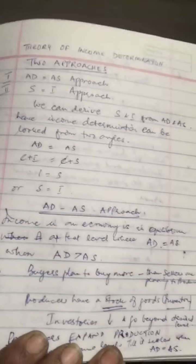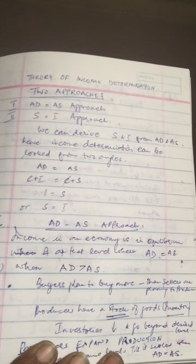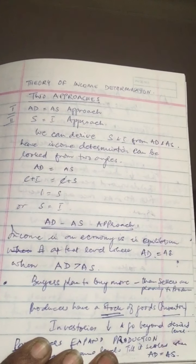Keynesian economics has two approaches: one is the AD-AS approach and the second one is the saving and investment approach. So let's have a look - we can go through that and then we'll see the table. We'll study the table and that's how it will be. Now look at this AD-AS approach.